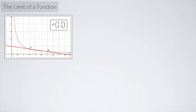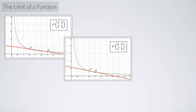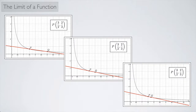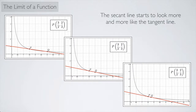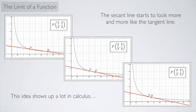We saw before that if you have a graph and you look at a point P and another point Q, and you draw the line connecting those two points — that's the secant line — and you let point Q get closer and closer to point P, then the secant line starts to look more and more like the tangent line to the graph. This idea of one thing approaching another shows up a lot in calculus.